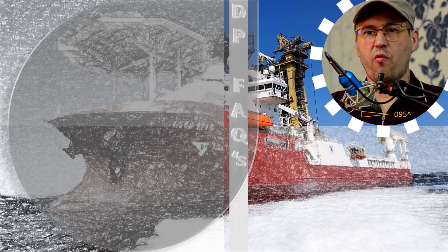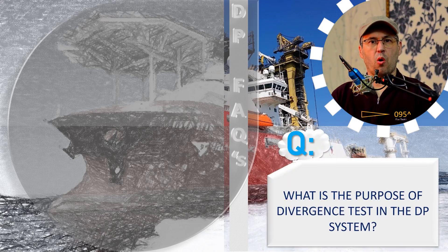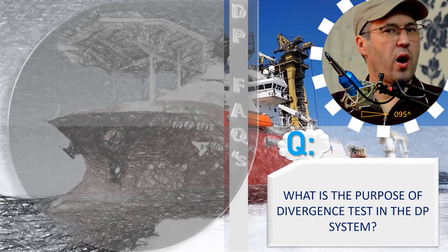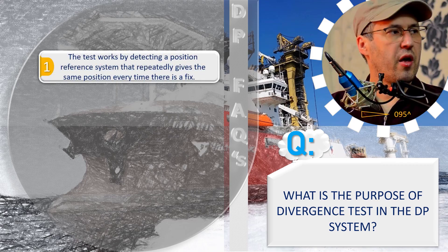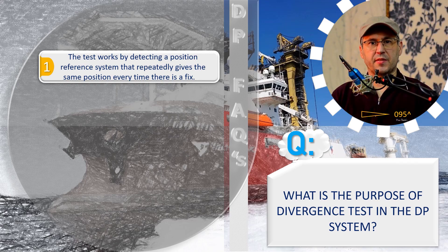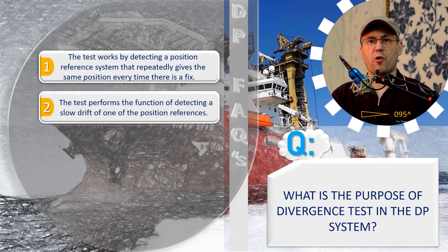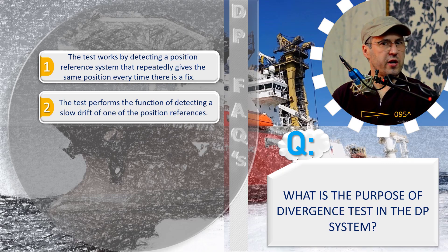What is the purpose of the divergence test in the DP system? Variant 1: the test works by detecting a position reference system that repeatedly gives the same position every time there is a fix. Variant 2: the test performs the function of detecting a slow drift of one of the position references.